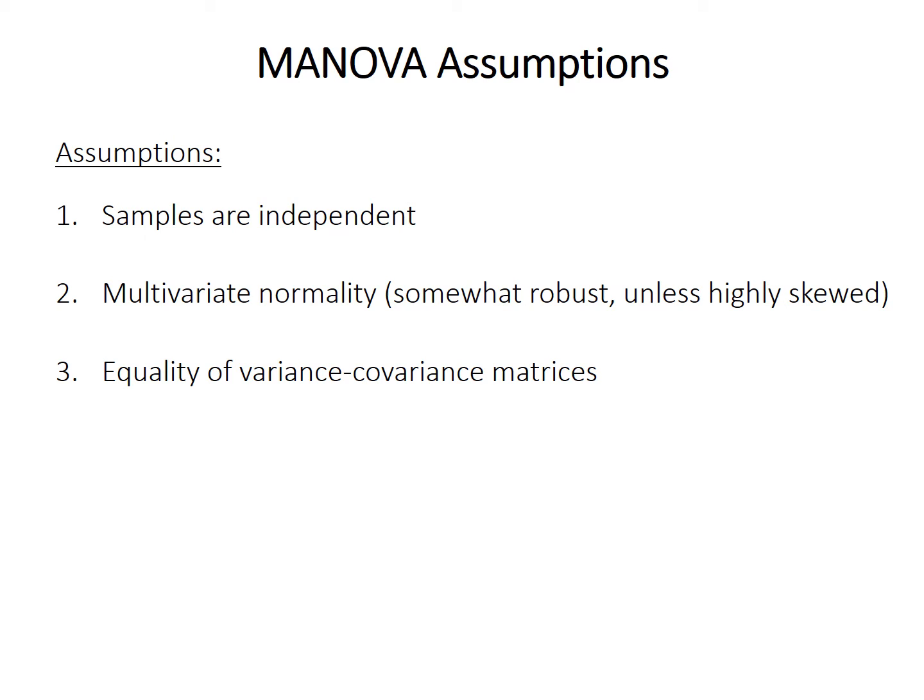The assumptions of MANOVA are typical of parametric multivariate tests. All samples must be independent of one another and multivariate normal. Like many parametric tests for central tendency, MANOVA is fairly robust to non-normality as long as sample sizes are large and the variables aren't heavily skewed.